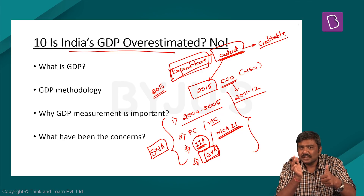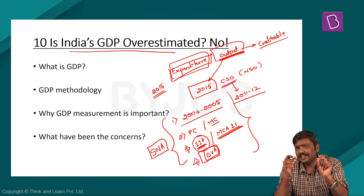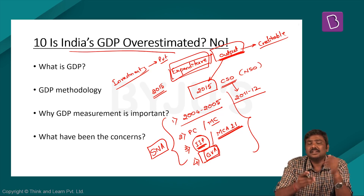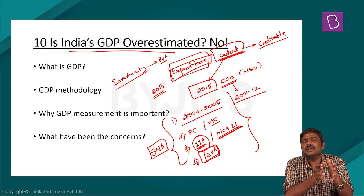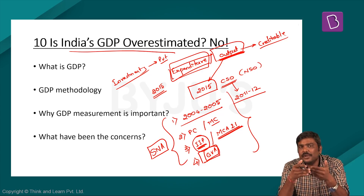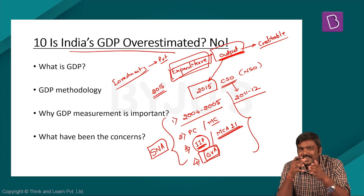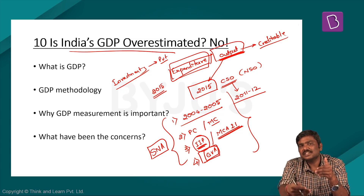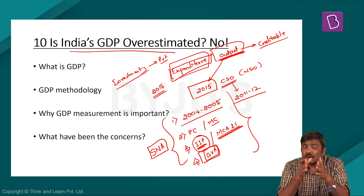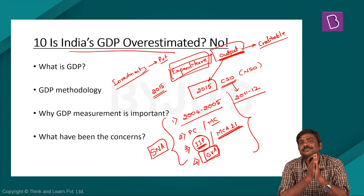Why is overestimation of GDP a problem? Correct GDP estimation is needed because many times, investment decisions by the private sector — both domestic and foreign — are based on GDP growth rates. A higher GDP growth rate signals that the economy is performing well, resource utilization is increasing, and profit margins are rising. So there is a clear correlation between higher GDP growth rate and investment from the private sector. Apart from this, it also has a very big bearing on the policies of the Government of India.